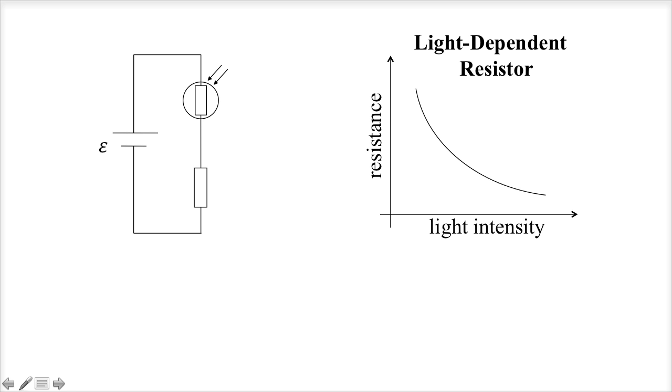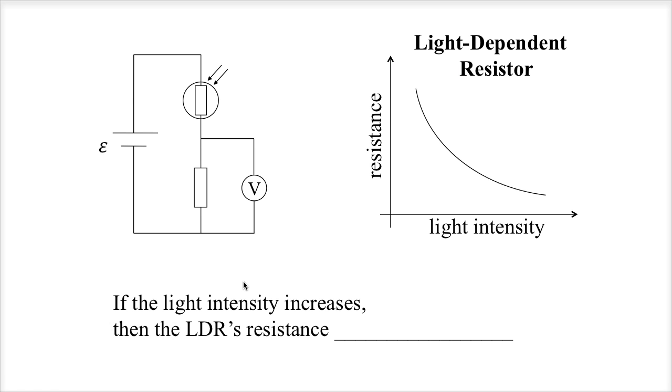Let's take this and put it into action. We're going to attach a voltmeter across the bottom resistor, not the LDR, and we ask the question: if light intensity increases, what happens to the LDR's resistance and what happens to the reading on the voltmeter?